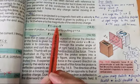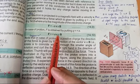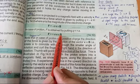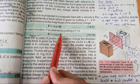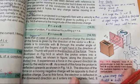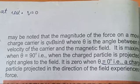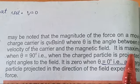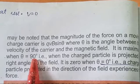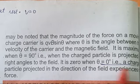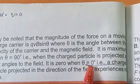The cross product introduces sin θ, so F = e·V·B·sin θ. The force is maximum when θ = 90°, meaning V and B are perpendicular to each other. The force is minimum (zero) when θ = 0°, meaning a charge projected along the direction of the field experiences no force.